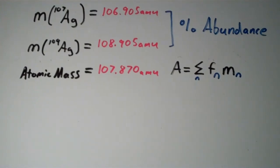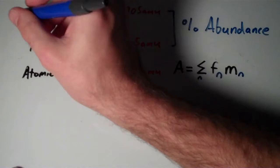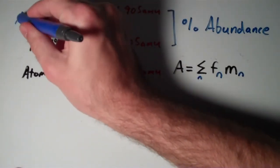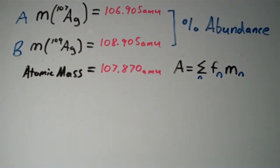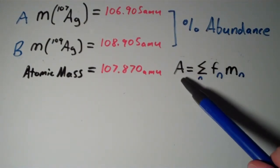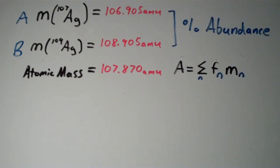To set up the equation, I'm going to call silver 107 A and silver 109 B. You'll see why I did this in just a second. It just makes the calculations and writing a lot easier.